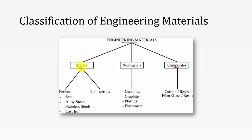Further, the metals are classified into two: ferrous and non-ferrous. If the metal has some iron content then it comes under ferrous metals. If it doesn't have any iron content then it comes under non-ferrous metals. Examples of ferrous materials are steels, alloy steel, stainless steel, and cast iron.